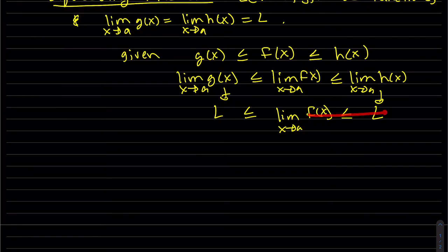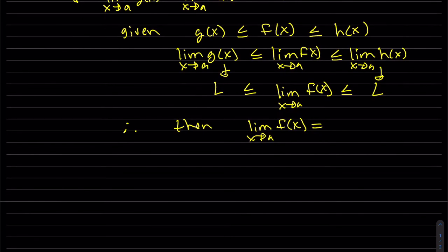So what we have here is the limit of the function f(x) at a is squeezed in between L. It's got to be less than L, but it's got to be greater than L or equal. So that's where the equal takes effect. So therefore, then it has to be equal to L.